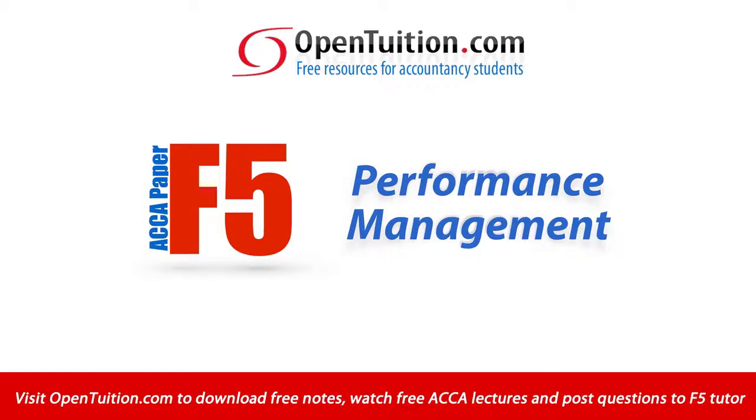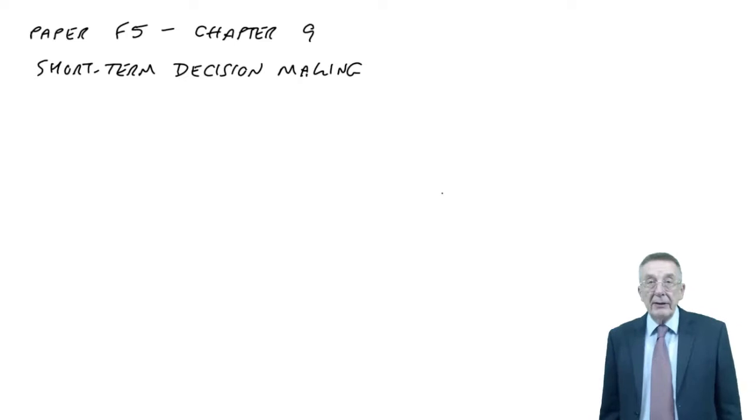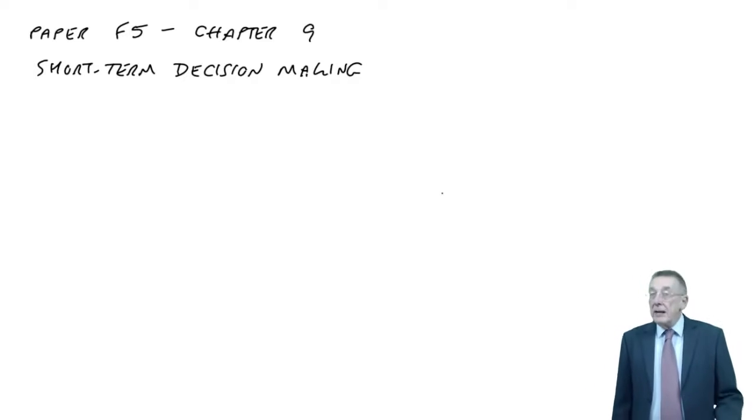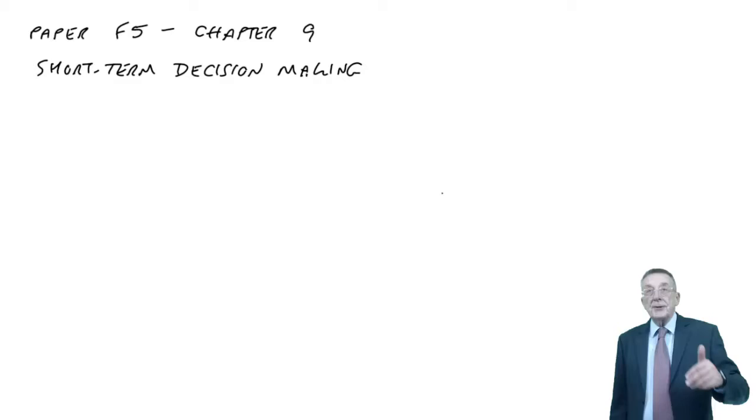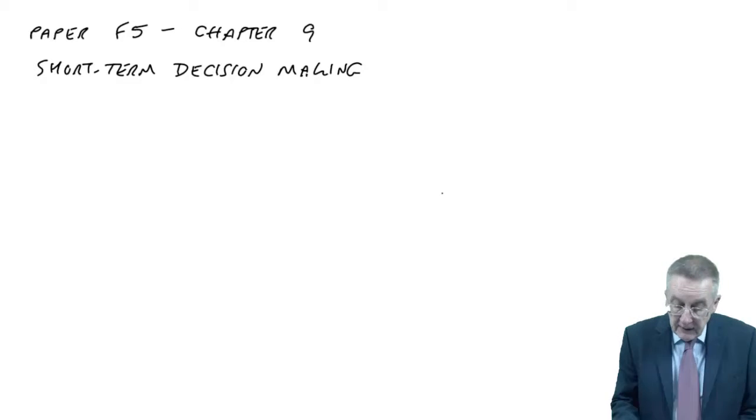This is a lecture from Open Tuition. To benefit from the lecture, you should download the free lecture notes from opentuition.com. This is the last of three lectures on chapter nine of the paper F5 lecture notes. In the previous lectures, we've done shut down decisions and relevant costing. The last one is make or buy.